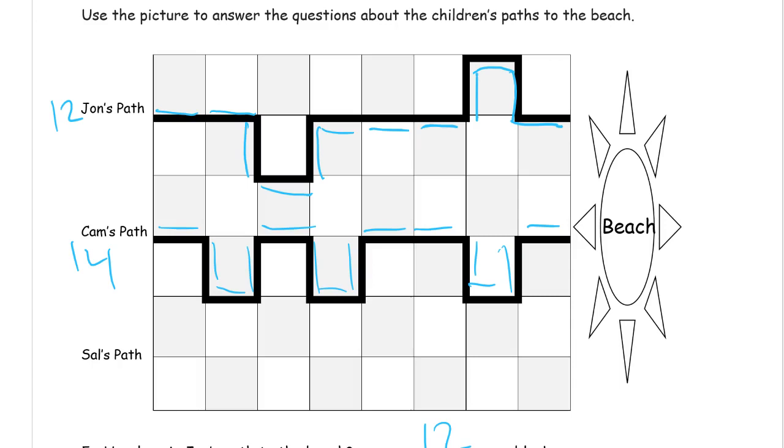John's path kind of went around something here and went around something there. So if it was straighter, it would probably be shorter. We could take out just one of those detours. And it would still be shorter than John's path.